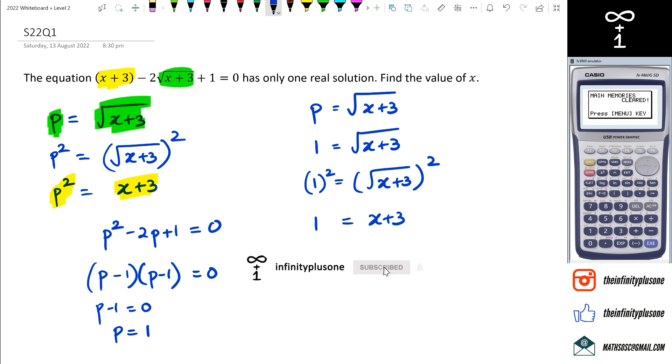And then we can say that x is equal to 1 minus 3, therefore we can say that x is equal to negative 2. Yeah, I think that's pretty much it for this.